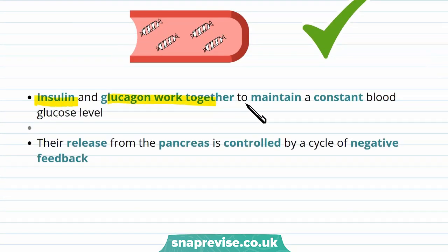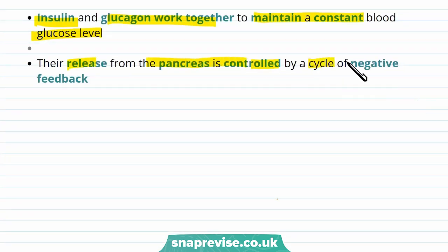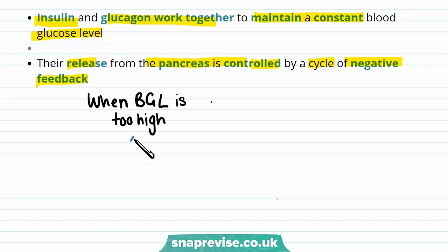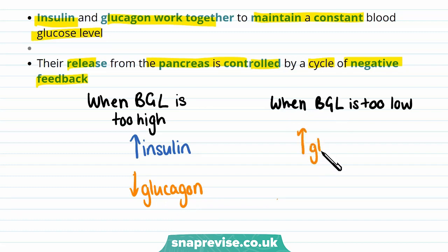Insulin and glucagon work together to maintain a constant blood glucose level. Their release from the pancreas is controlled by a cycle of negative feedback. Negative feedback is a form of homeostasis and it helps keep everything balanced. For example, when blood glucose levels are too high, this causes an increase in the release of insulin and a decrease in the release of glucagon. However, when blood glucose levels are too low, this causes an increase in the release of glucagon as well as a decrease in insulin, raising blood glucose levels back up to a normal level.